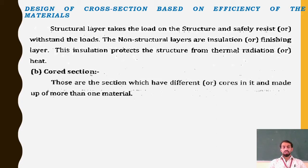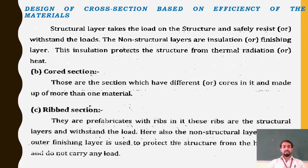Cored sections have different cores and are made up of more than one material. Then ribbed sections: these are prefabricated with ribs and have structural layers that withstand the load. The non-structural outer finishing layer protects the structure from heat effects and does not carry any load. Those layers which carry no load are known as non-structural layers.